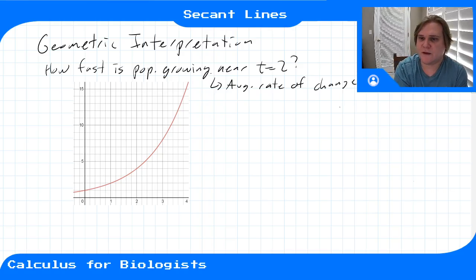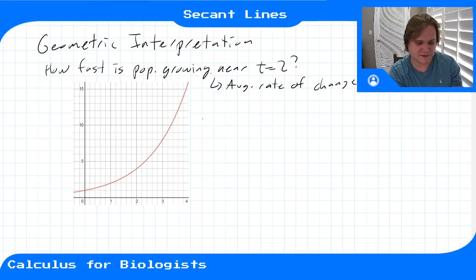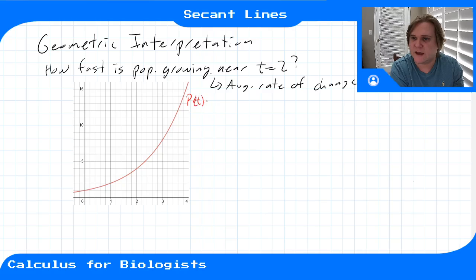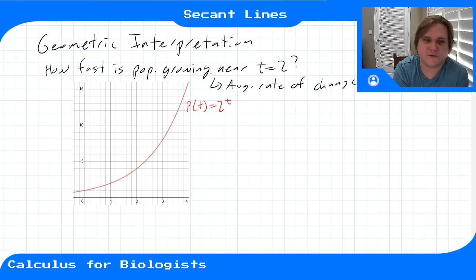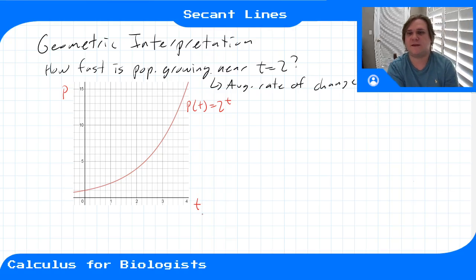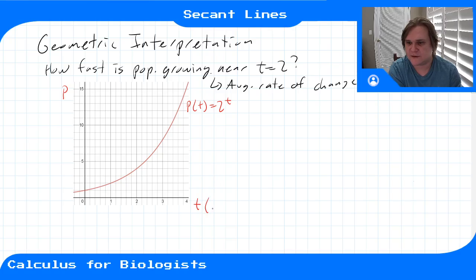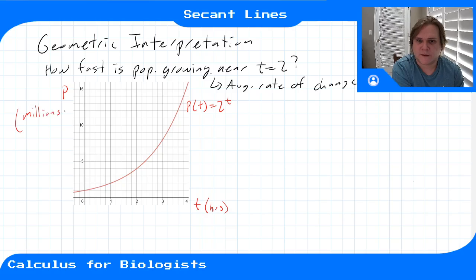Here's my graph, this is p of t. Two to the t is our function, p of t equals two to the t. That's our function for population growth from before, and here I'm plotting p versus time — population in millions of cells versus time in hours. If I wanted to find the average rate of change between t equals zero and t equals two: